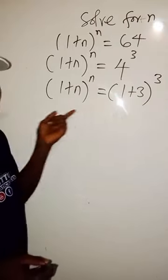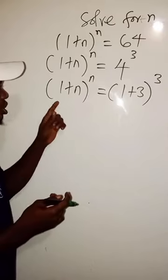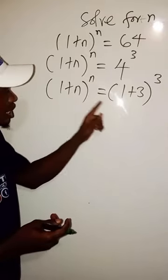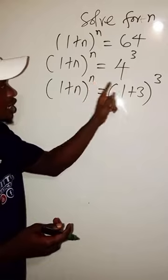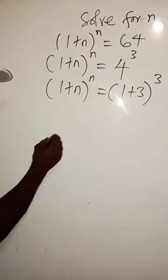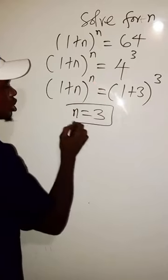Now when you look at these two sides in comparison, you can see we have 1 here and 1 here. We have n here and 3 here, we have n here and 3 here. So now by comparison you can see that n equals 3.